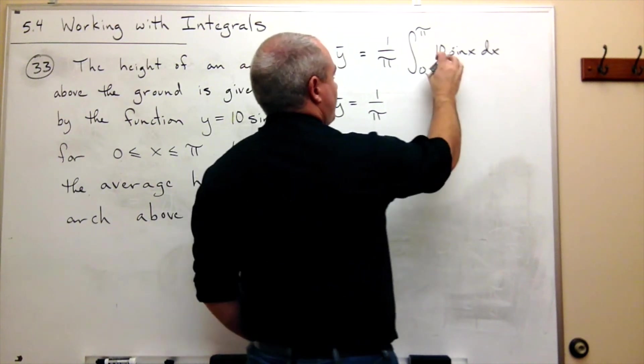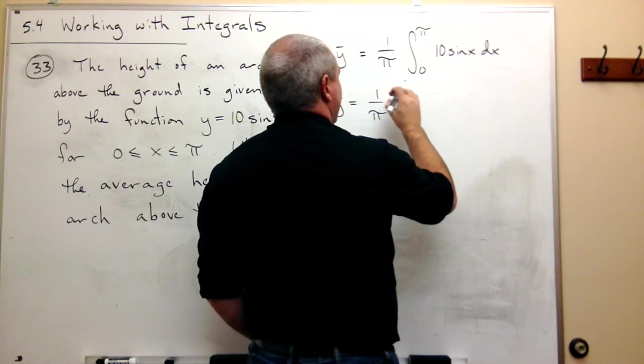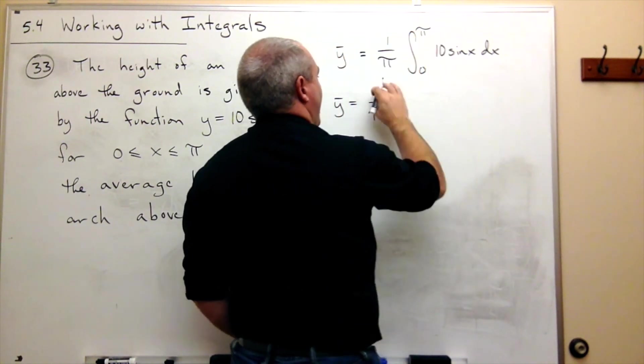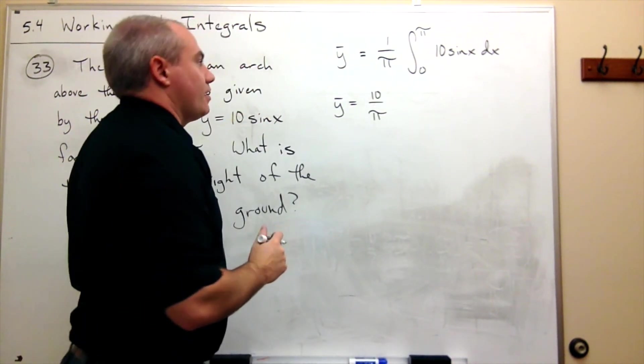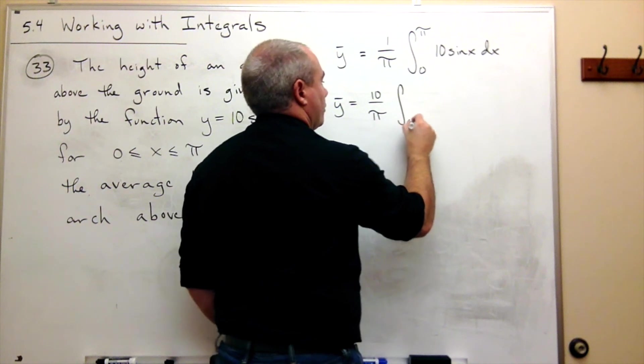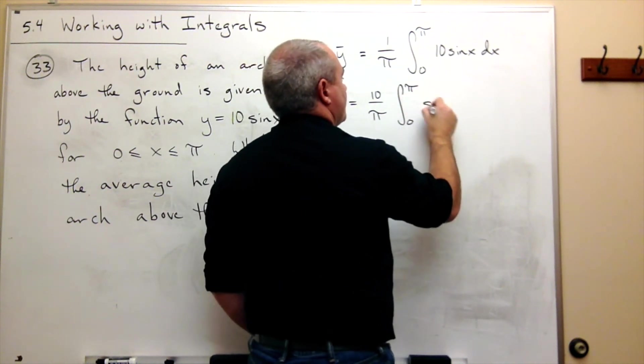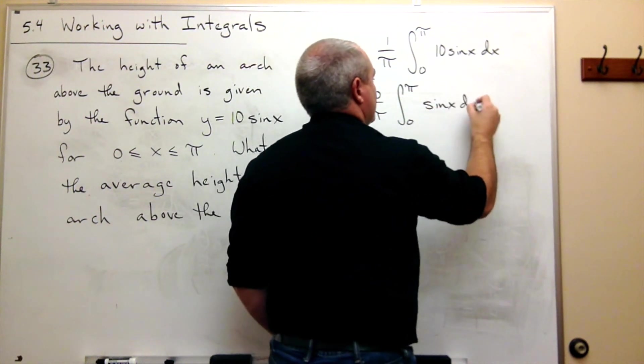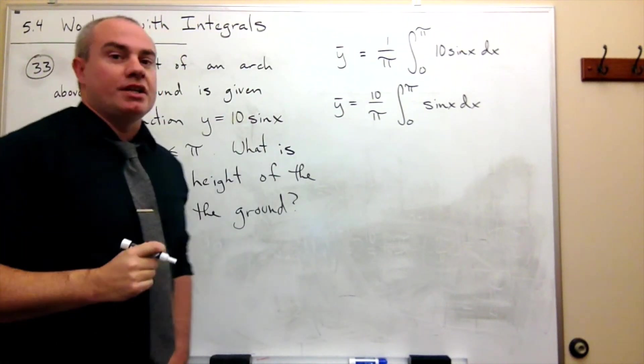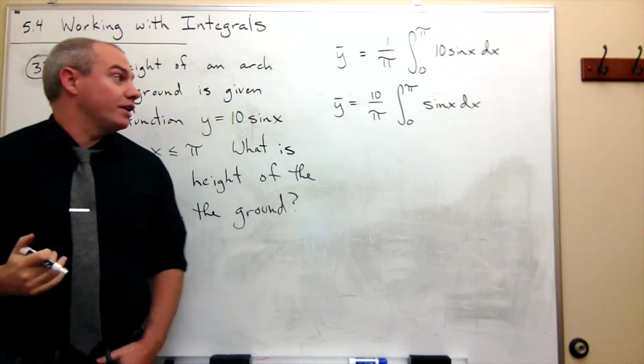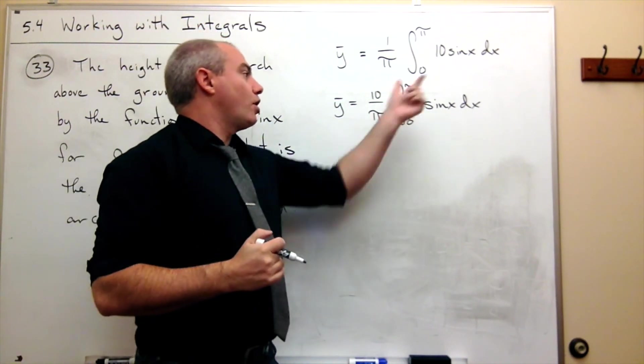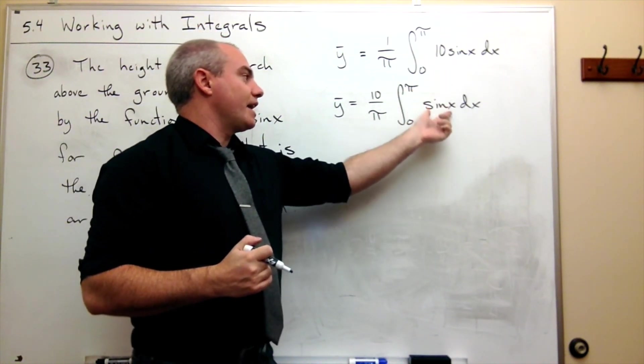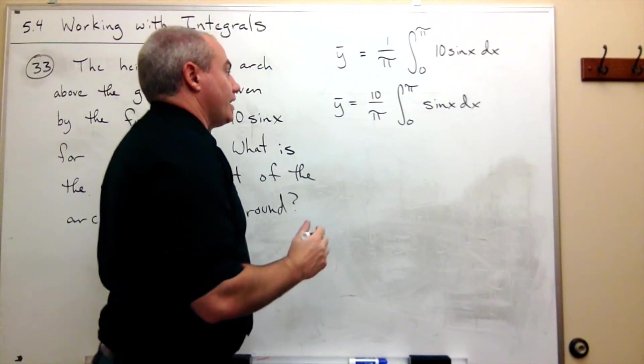10 can come out of the integral and I'll get 10 over pi times the integral from 0 to pi of sine x dx. We just need to know what's the antiderivative of sine x. Since cosine's derivative is negative sine, it must be negative cosine.